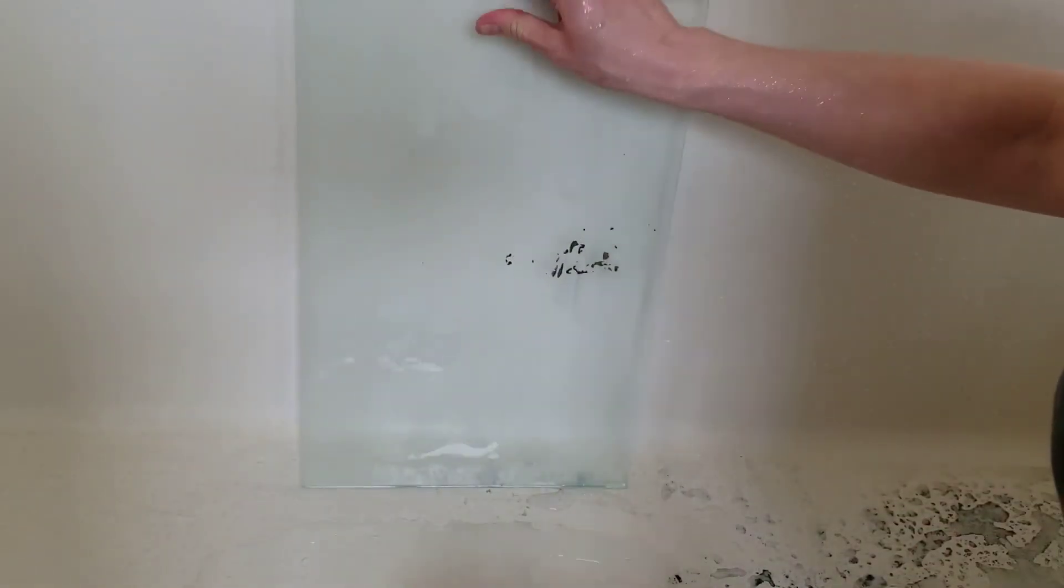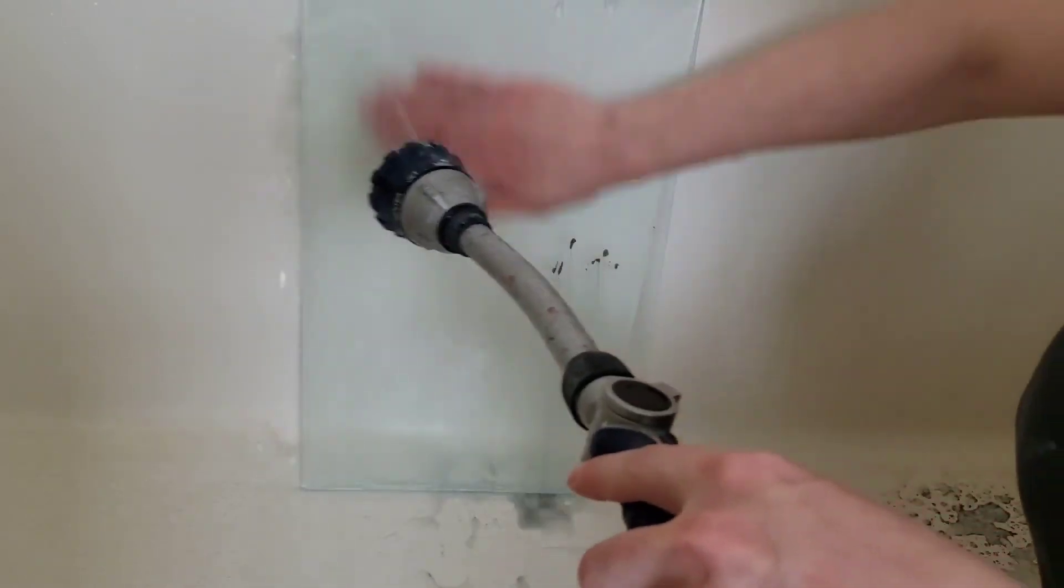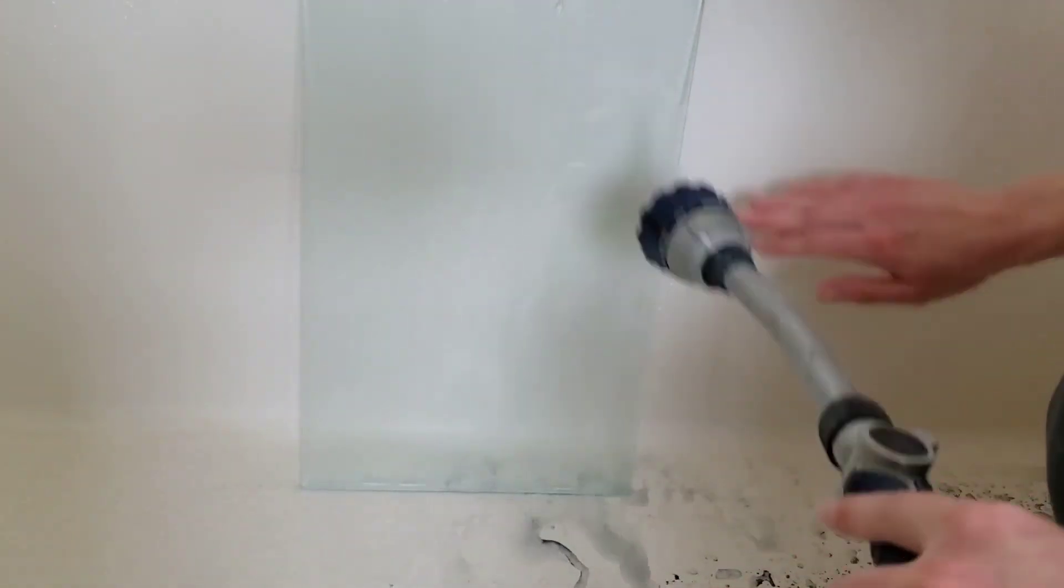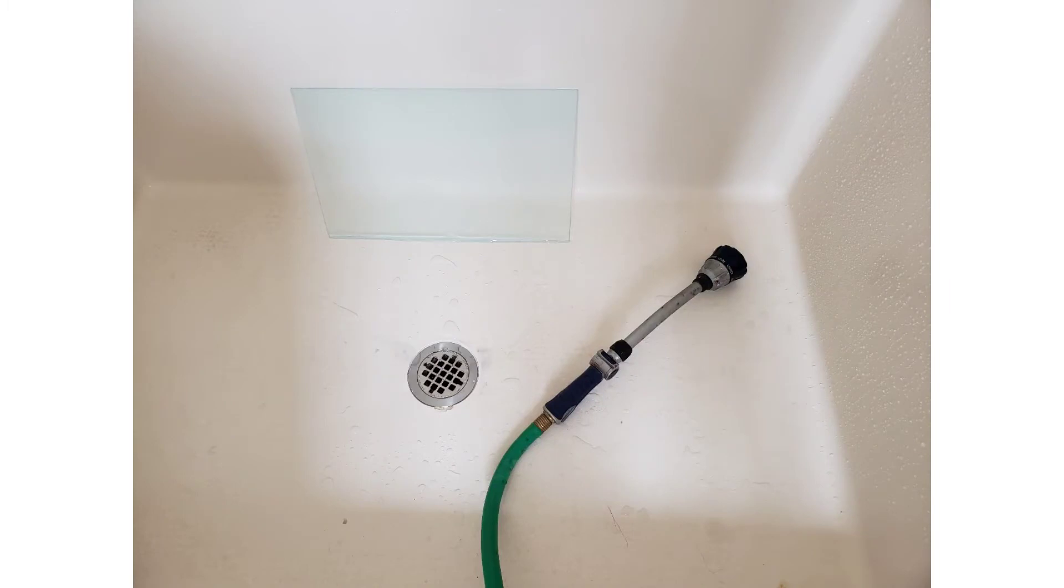Don't forget to flip the plate over and wash the back side, the smooth, unfrosted side as well. I am using a garden hose with a spray attachment because I also use this for screen printing.